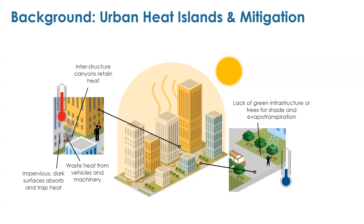Temperatures vary within cities due to the spatial distribution of water, soil, vegetation, and impervious surfaces. Buildings and impervious areas are very liable to obstructing the flow of natural air, and as a result there's a lot of heat retained in these areas. On the right side you can see the lack of green infrastructure — that is, trees for shade and evapotranspiration.